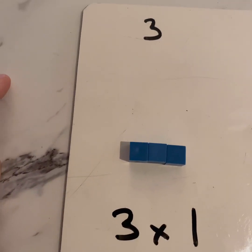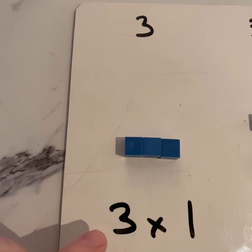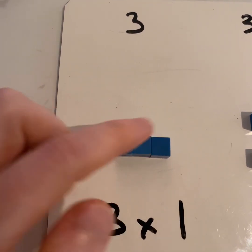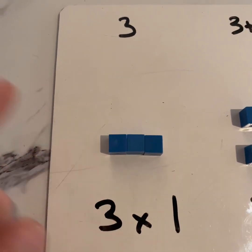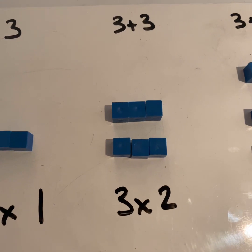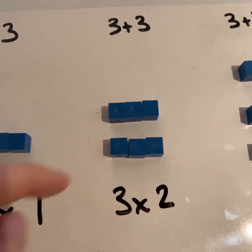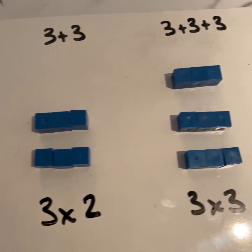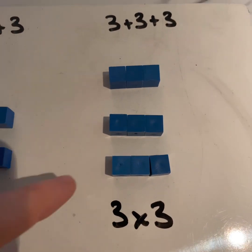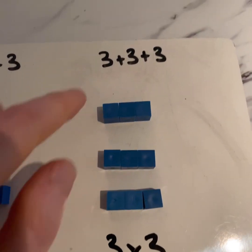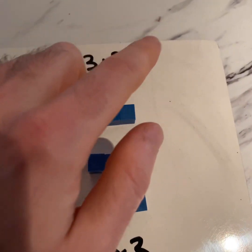Let's start to look at the three times table. This is where the cubes come in handy. If you look at three times one, or three multiplied by one, it means we've got three cubes. Three times one — one group of three — three. If I go to three times two, it means I've got two groups of three, or three add three. Moving up to three times three, now I've got three groups of three, which is three add three add three.